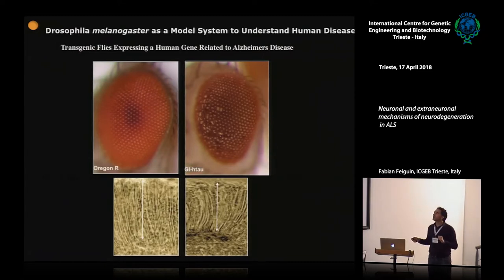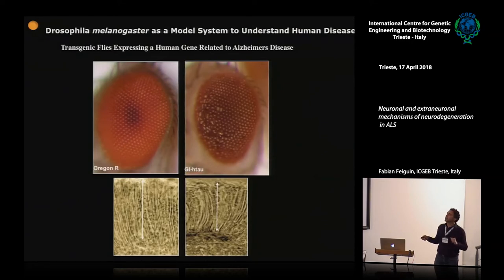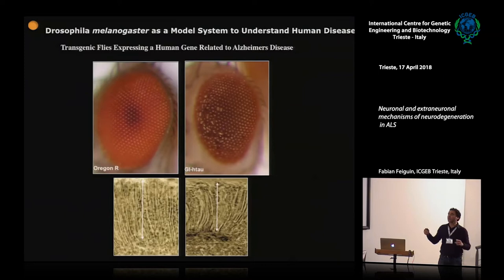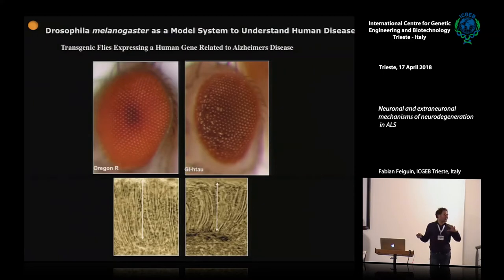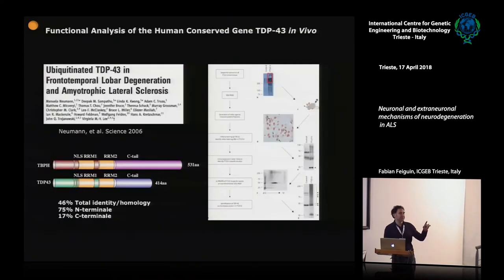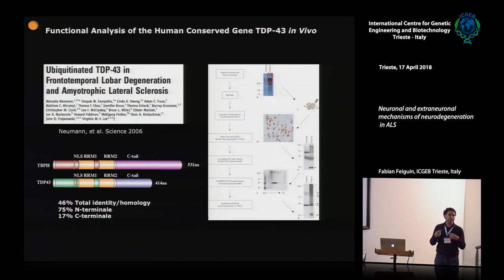One way is to express in Drosophila human genes related to the disease that may produce a dominant phenotype. In this case, we generated transgenic flies expressing a variant of the human tau gene — a very long form only present in Alzheimer's patients, not in normal individuals. We look at the eyes of the flies because it's a strong concentration of neurons — more than 10,000 neurons at once. When we express the human tau involved in the disease, it produces degeneration of this structure.